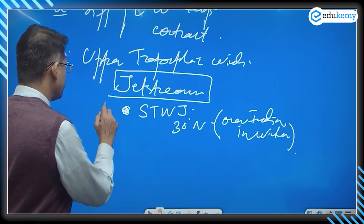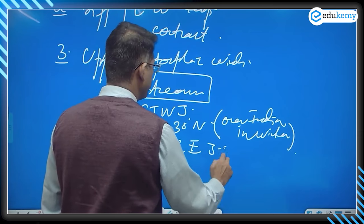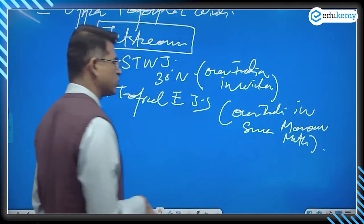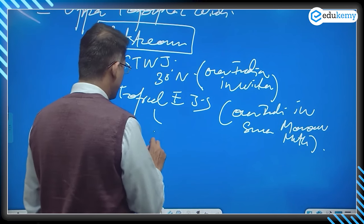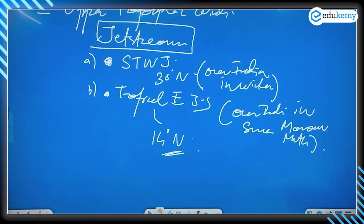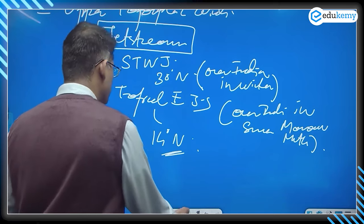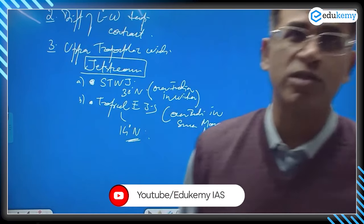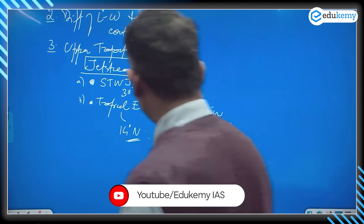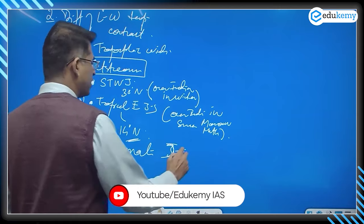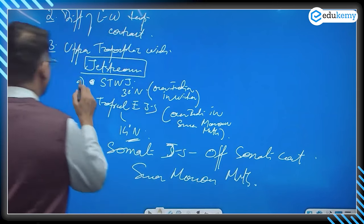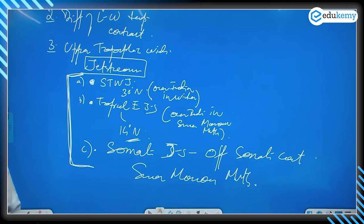The second jet stream is the tropical easterly jet stream, which is over India in the summer monsoon months, at around 14 degrees north latitude. The third jet stream is the Somali jet stream, which is present off the Somali coast in the summer monsoon months. There are seasonal variations in these jet streams; the Somali jet stream runs off the Somali coast along the Arabian Sea.